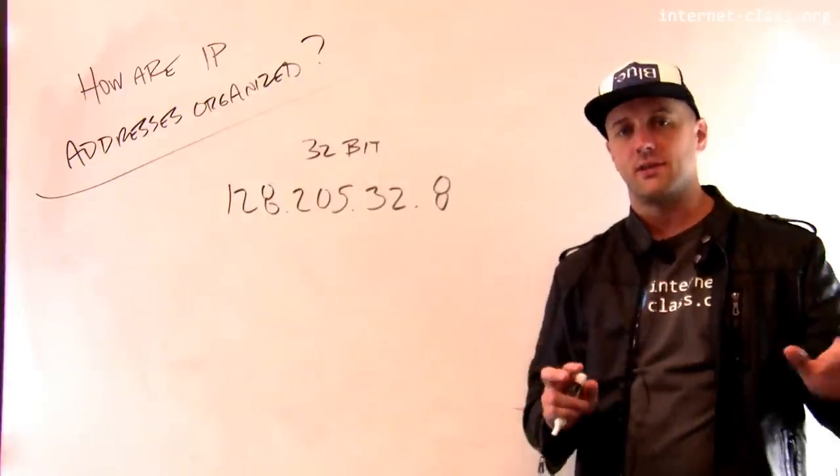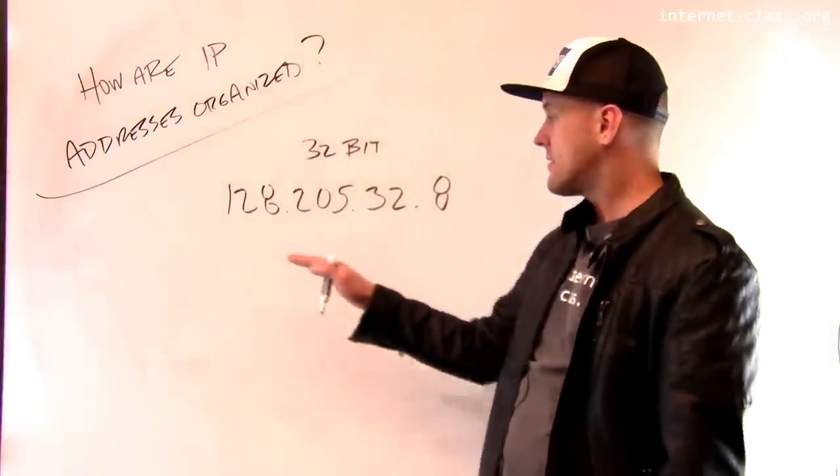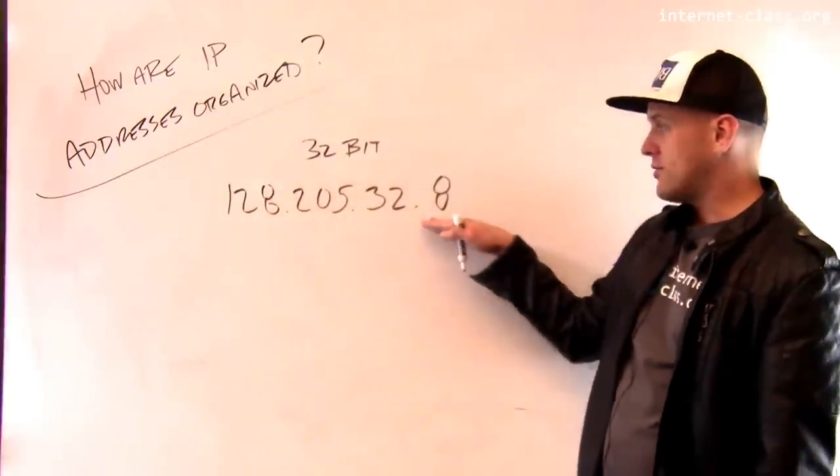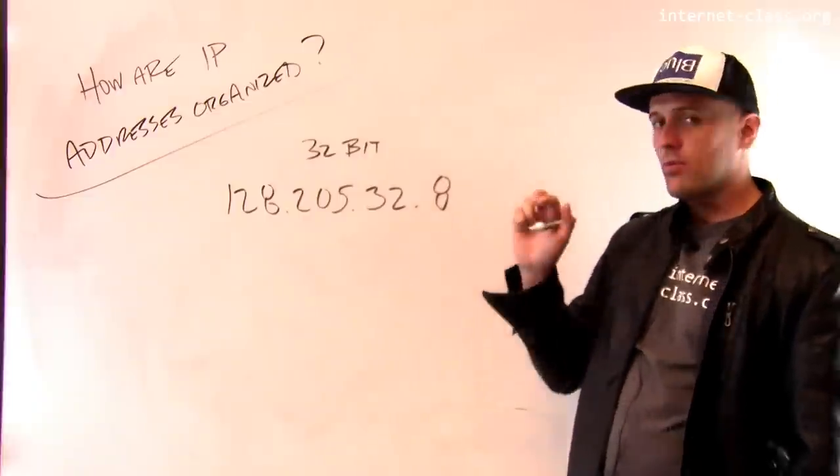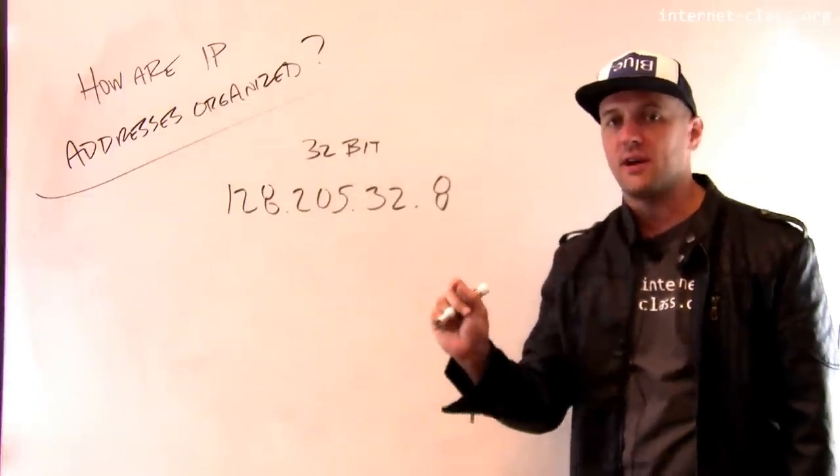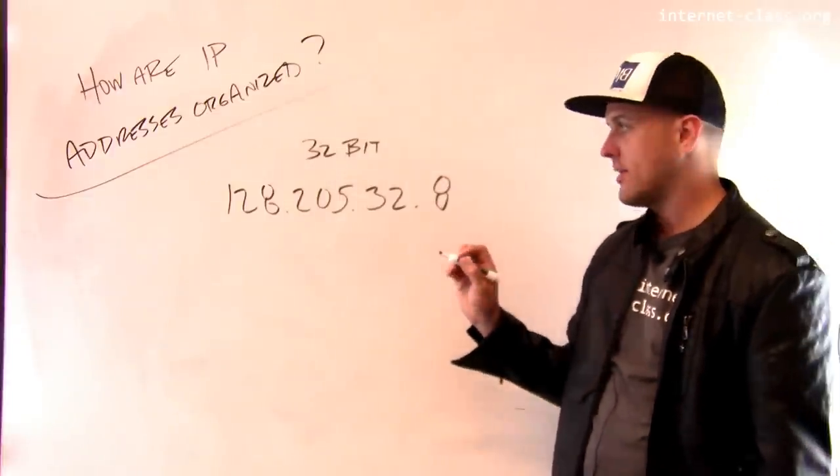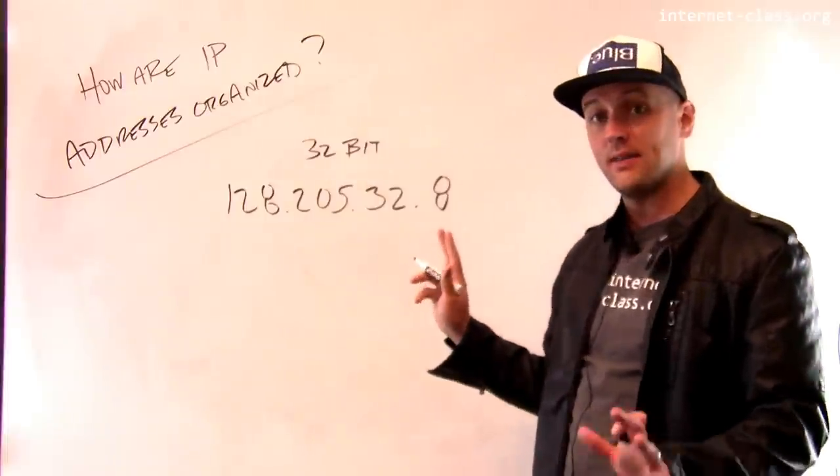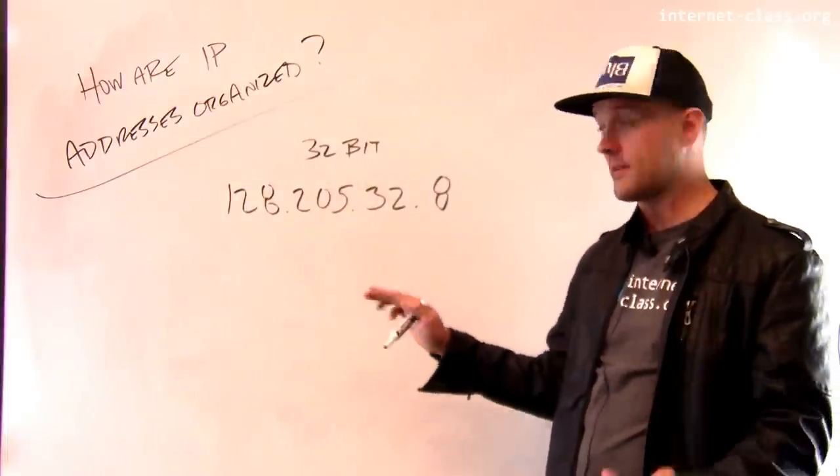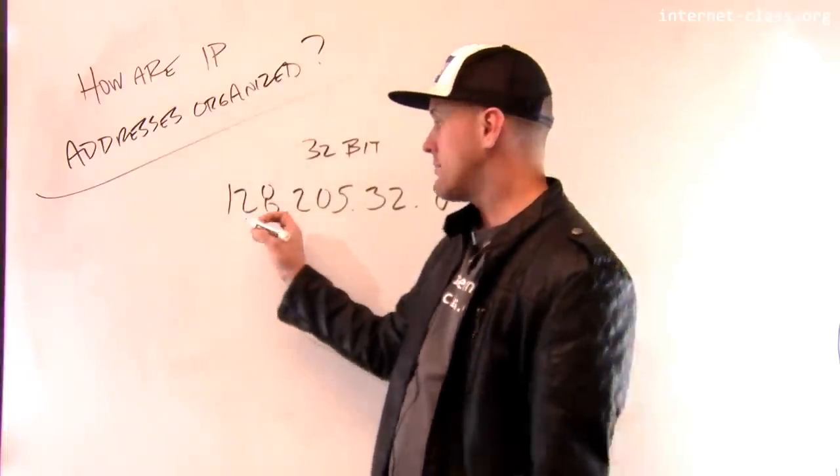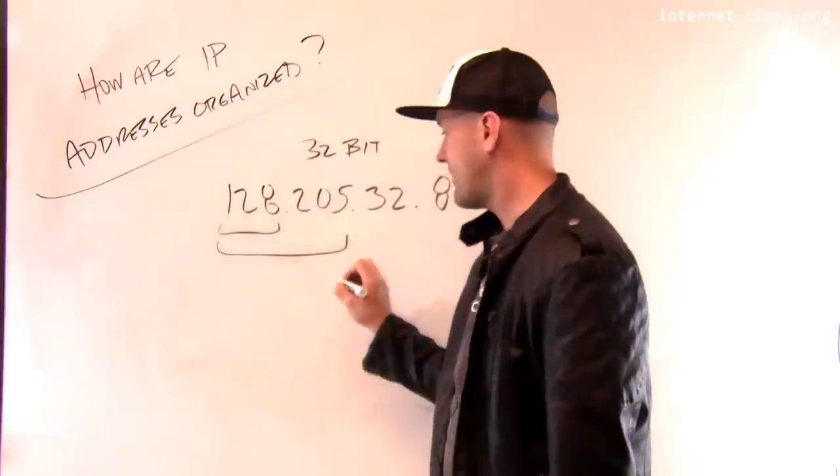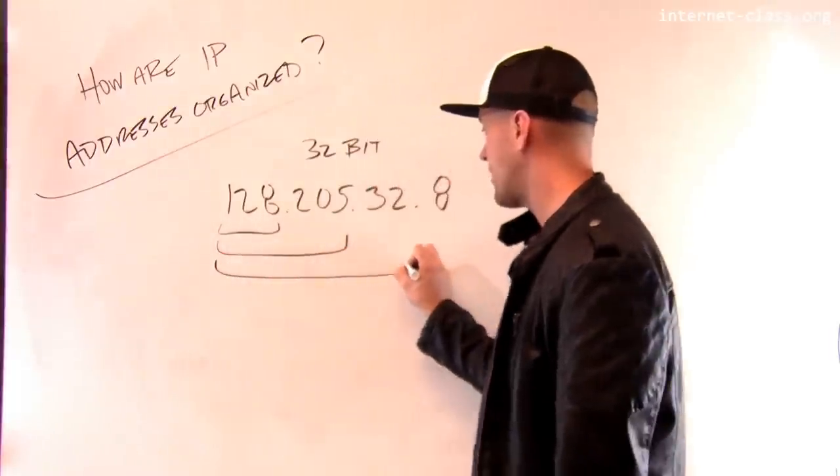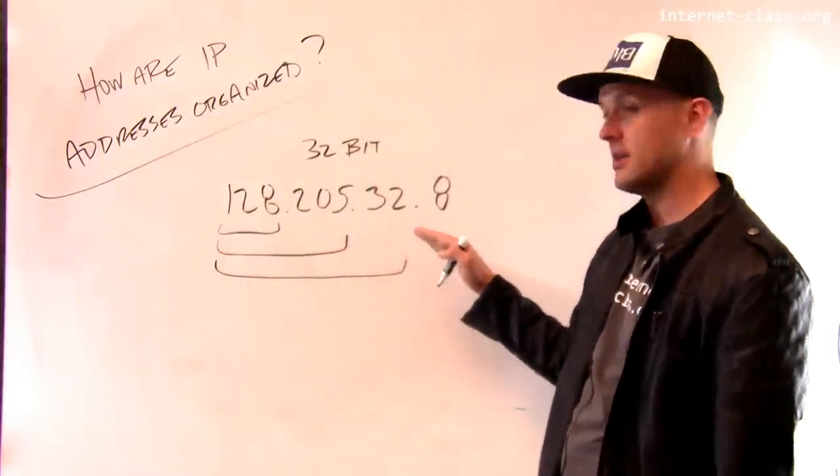And this goes back to the very early days of the internet. So rather than saying, what's the route to 128.205.32.8, the router is going to use a prefix of the IP address to perform routing. So depending on the network that this is attached to, the route might be for just the 128 part, the route might be for 128.205, and the route could be also for 128.205.32.